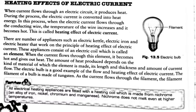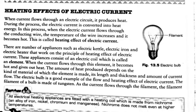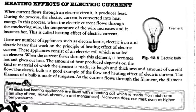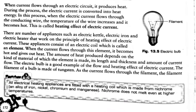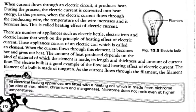During the process — that is, during the flow of current — the electric current is converted into heat energy. It means some of the electrical energy is converted into heat energy when it passes through a conductor, which results in an increase in temperature of the wire or conductor through which it flows. So the conductor becomes hot. This is called the heating effect of electric current.